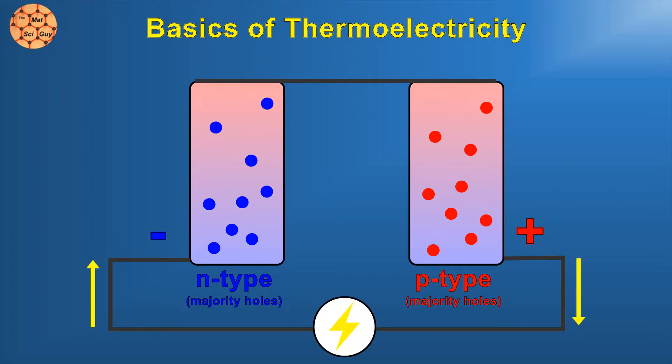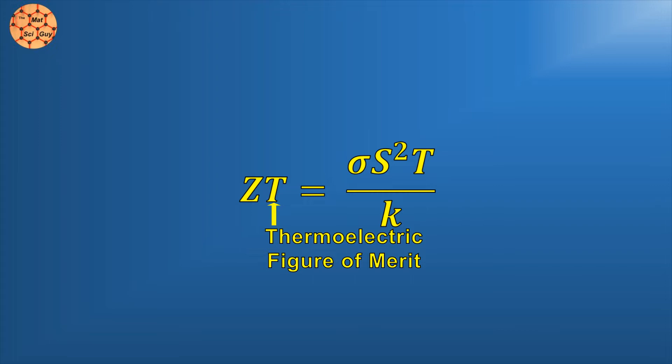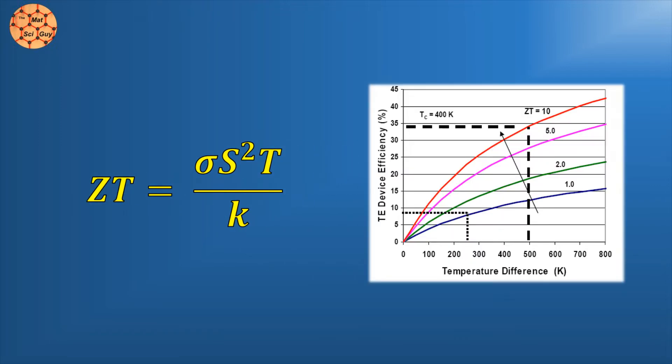Now that the basics are out of the way, let's think about what makes a good thermoelectric material. Usually thermoelectric materials like this are evaluated by a dimensionless number called the thermoelectric figure of merit, shown here as ZT. This ZT value correlates with overall power generation efficiency, so our goal is to make it as high as possible.